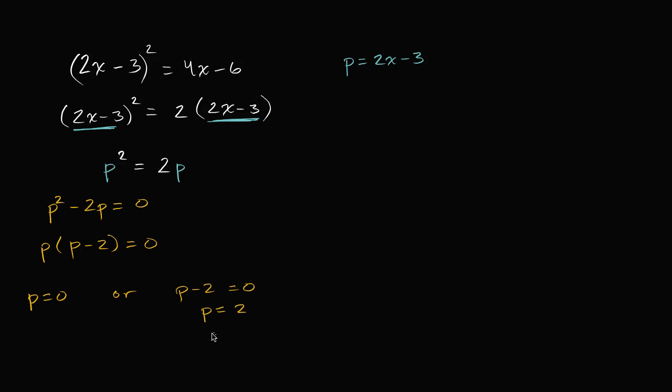Well, we're not quite done yet, because we wanted to solve for x, not for p. But luckily, we know that 2x minus 3 is equal to p. So now we could say either 2x minus 3 is going to be equal to this p value, is going to be equal to zero.